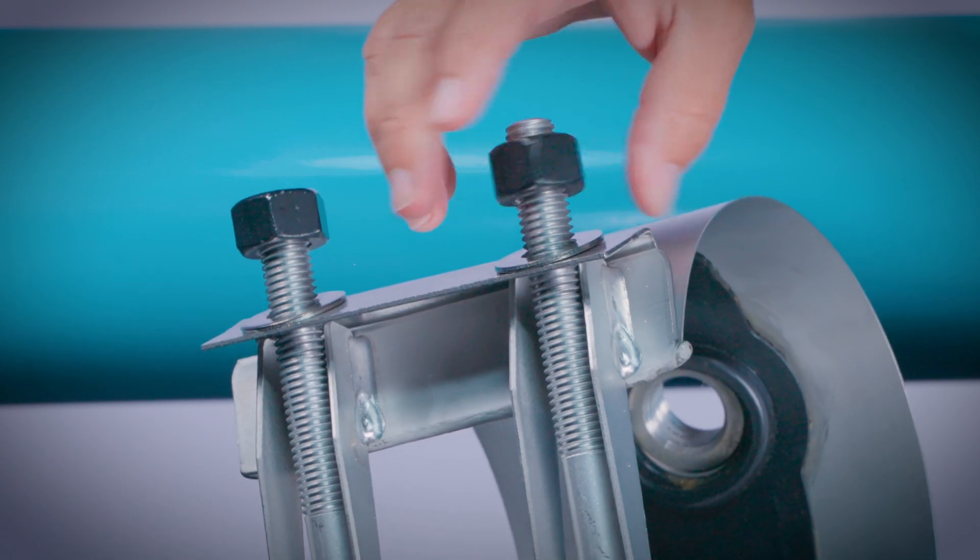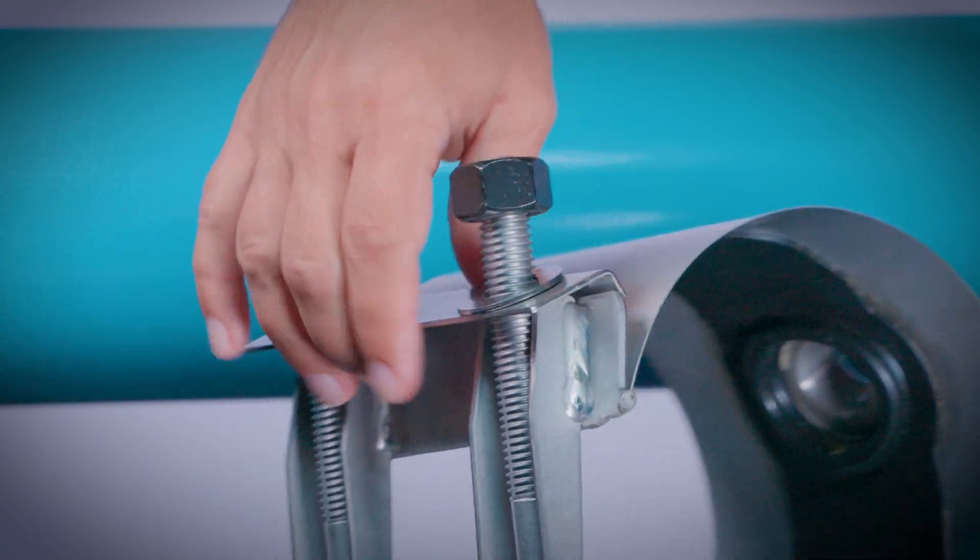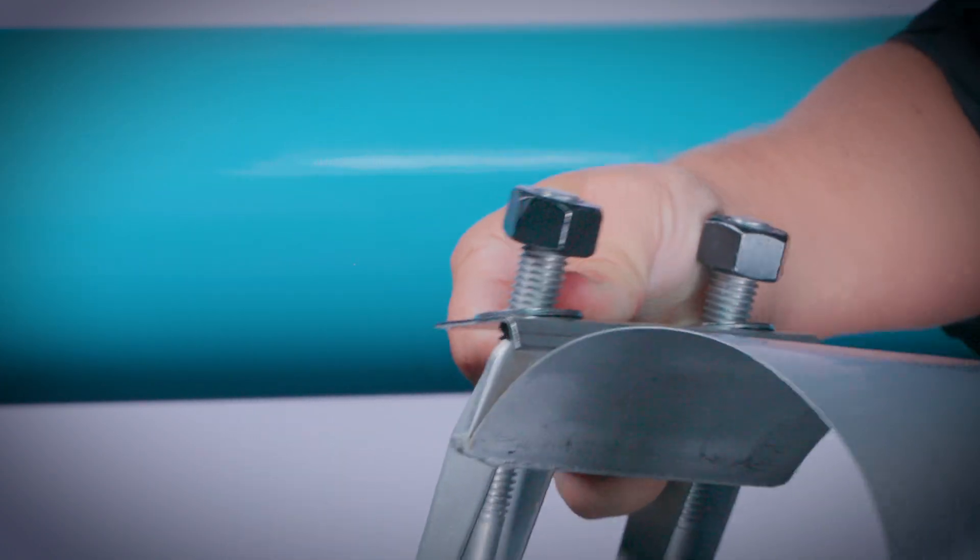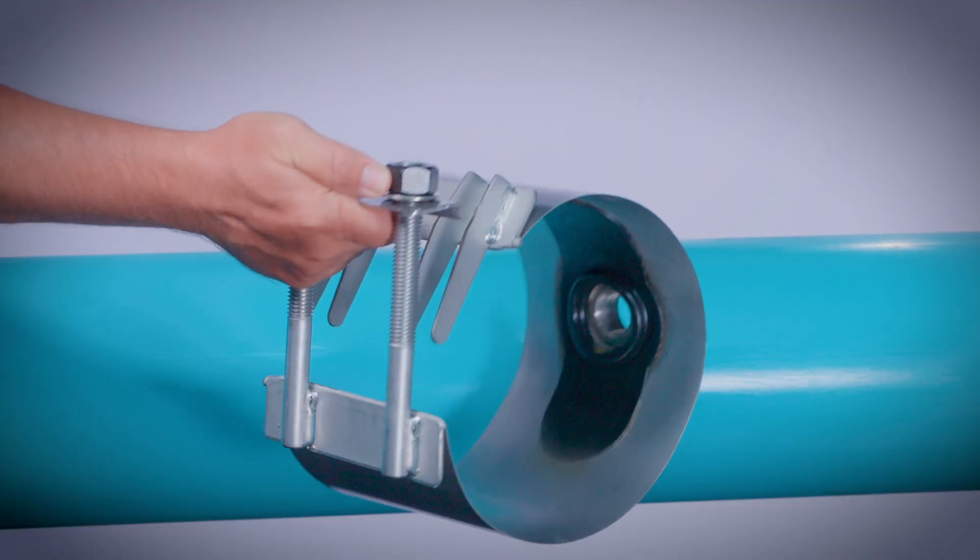Back off the nuts to the ends of the studs, but don't remove them. Separate the saddle and hold the lifter bar like a handle above the pipe.